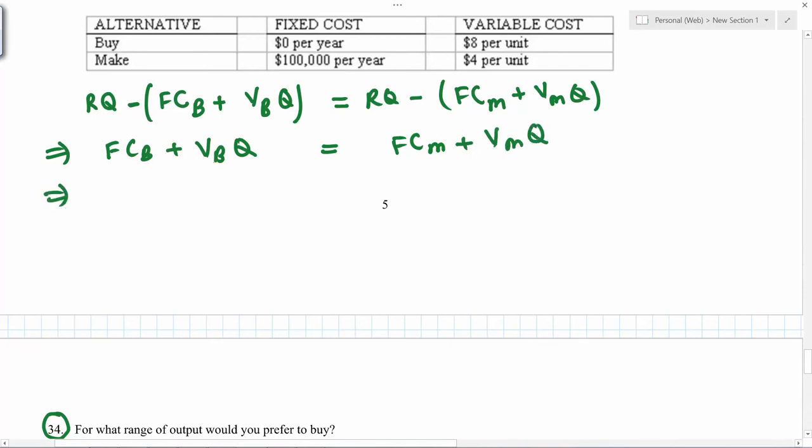So with the simplification, for buy, fixed cost is zero. Variable cost is 8Q. And on this side you have 100,000 plus 4Q. So if you simplify further, you get Q equals 25,000.